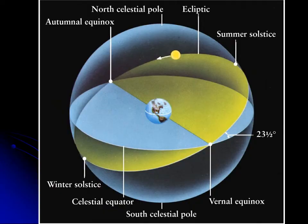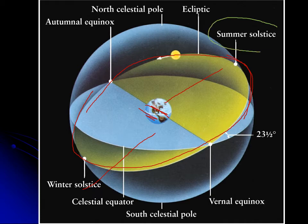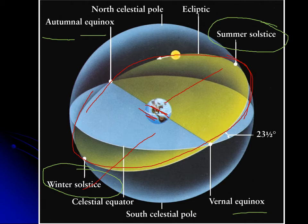On the celestial sphere you can plot the path of the Sun, and it makes a big tilted path that goes north and south. When it's north, it shines more on the northern part of Earth; when it's south, it shines more on the southern part. This gives rise to the seasons. The farthest north the Sun gets is called the summer solstice; the farthest south is the winter solstice. The equinoxes are when the Sun is on the celestial equator — the autumnal equinox in September and the vernal equinox in March.